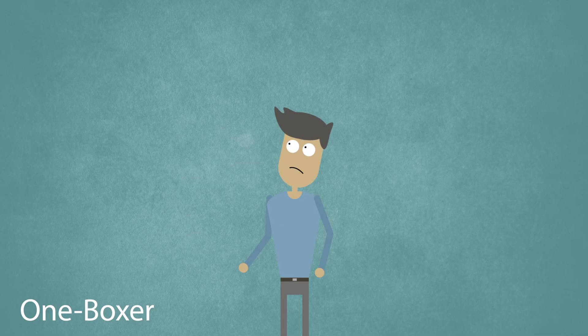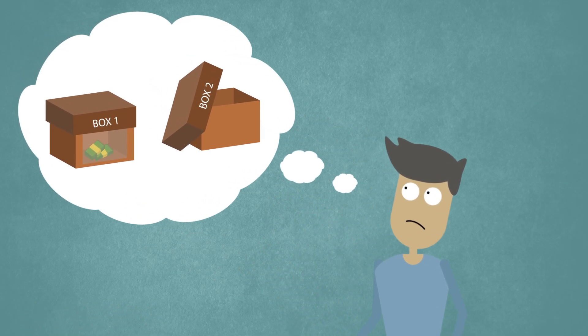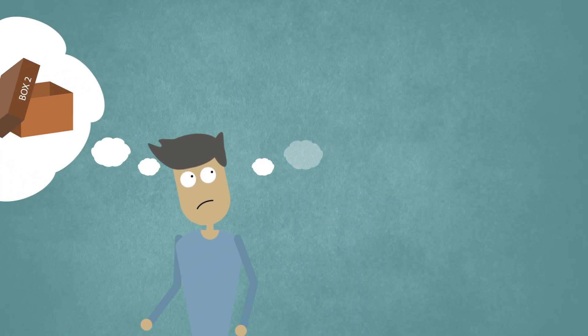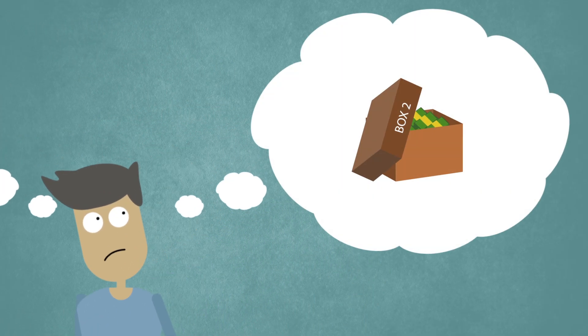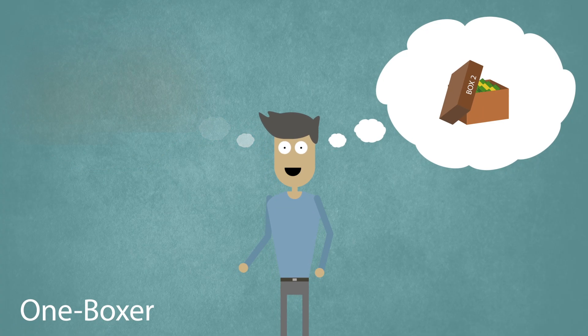If I decide to take what is in both boxes, then the supercomputer will have almost certainly predicted this and would have left the second box empty, leaving me with only £1,000. But if I decide to just take what's in the second box, then the supercomputer will have predicted this and put the £1,000 inside, leaving me much richer. I should therefore choose to take only what is in the second box.